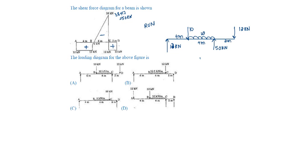Total downward load is 10 plus W into 4 plus 12 should be equal to upward reactions 12 plus 50. 12 and 12 get cancelled, this will be 40, so the W is 10 kN per meter, this is 10 kN per meter.